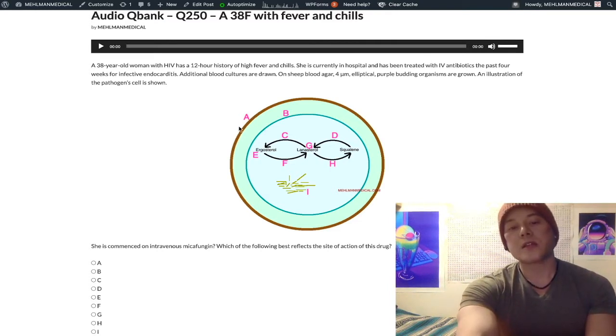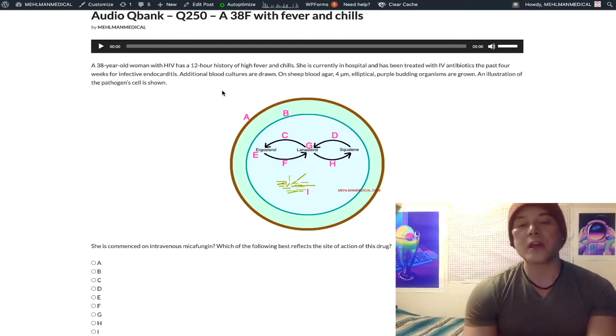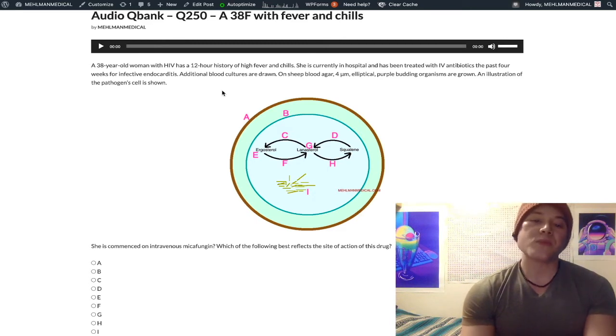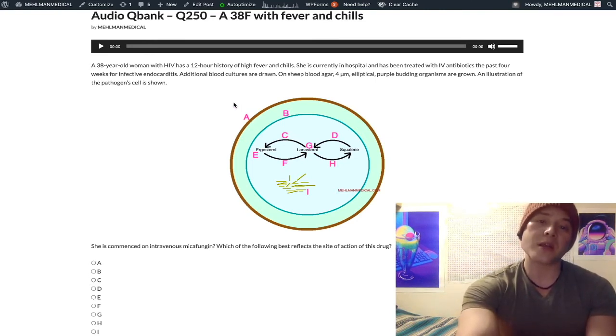Choice A is the fungal cell wall. This refers to caspofungin and micafungin, which is our correct answer here. So micafungin, caspofungin are in the drug class called echinocandins. Echinocandins, they inhibit beta-1,3-glucan synthase, which is important for carbohydrate synthesis. So beta-1,3-glucan carbohydrate synthesis is inhibited by caspofungin, micafungin. That's our cell wall. That's choice A. That's our correct answer.